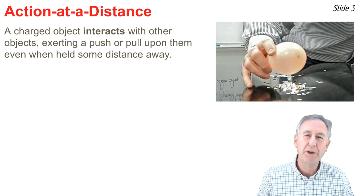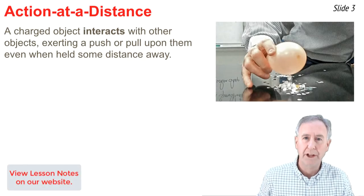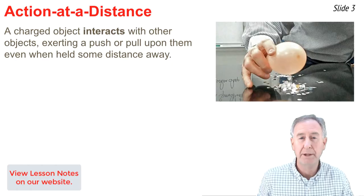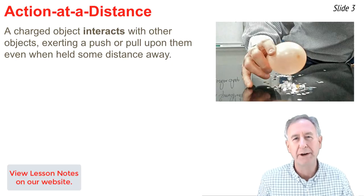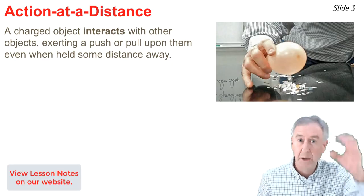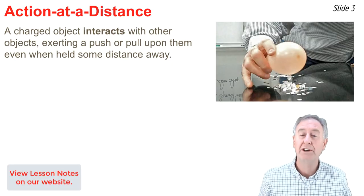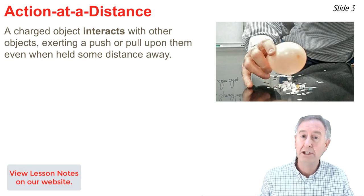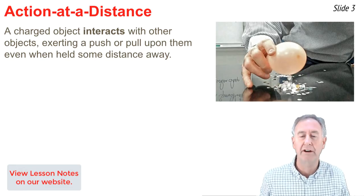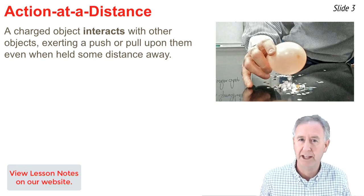Here's something you can do at home. Get a balloon and blow it up and give it a rub against some animal fur, a wool sweater, or even your hair. Then bring that balloon near some paper bits on a table, and as the balloon is brought near, it will lift the paper bits up off the table.